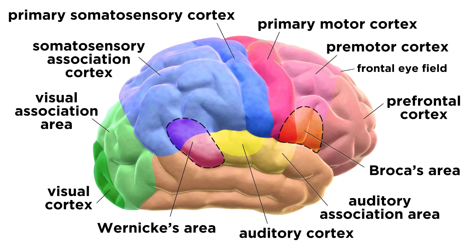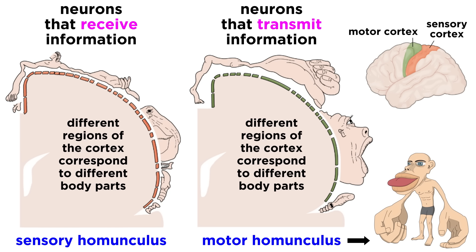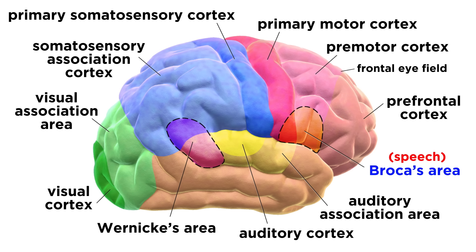Let's discuss the motor areas first. The primary motor cortex controls voluntary motion, and each part of the body is relegated to a particular part of it. The most delicate voluntary motion occurs in the face, tongue, and hands, so a disproportionate amount of this cortex is devoted to those areas. The motor homunculus is an image depicting the human body with all parts sized proportionally to the quantity of neurons that control them, which is why some features seem dramatically oversized. The premotor cortex helps plan movements and sequences them into complex tasks like playing a musical instrument. Broca's area controls muscles involved in speech production, and the frontal eye field controls voluntary eye movement.